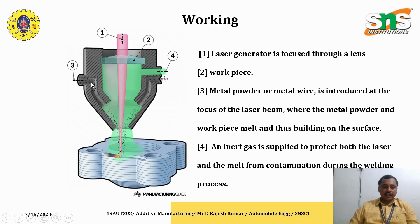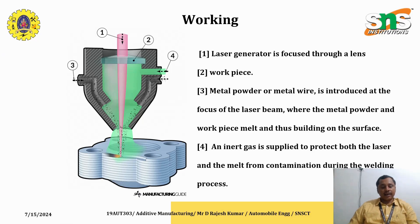This diagram clearly shows how the laser source is concentrated and the material is flowed in powder form. Point one indicates the laser focused through a lens, which is the main thing because the laser is the source that fuses the metal powder. Point two is the workpiece, and point three is the metallic powder supplied through either side of the nozzle.